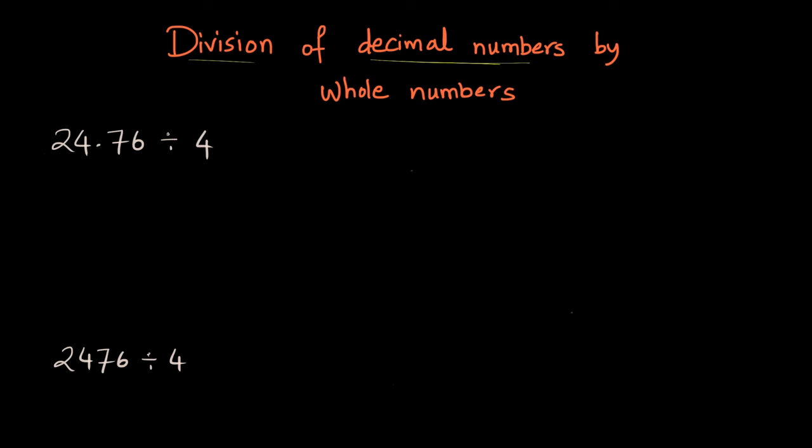What we are trying to do is write 24.76 as 2476 over 100, then divide by 4. We can write this as 2476 divided by 4, all divided by 100. Now we are focused on the numerator part where we will perform 2476 divided by 4, and later we will divide it by 100.